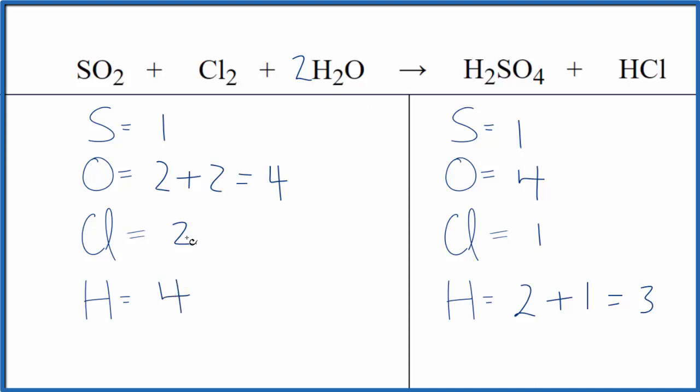At this point I think if we put a two in front of the HCl for the chlorine, one times two, that would balance the chlorines. And let's update the hydrogens. We have two here plus two times the one. That gives us four. And we're done. This equation is balanced.